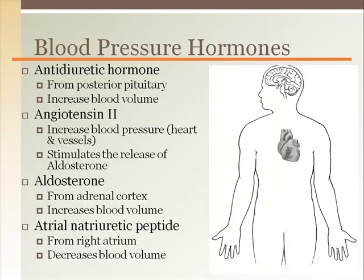Atrial natriuretic hormone, also known as atrial natriuretic peptide, comes from the right atrium and is one of the only hormones that will decrease blood pressure. It is released when the right atrium is stretched out due to too much blood volume.